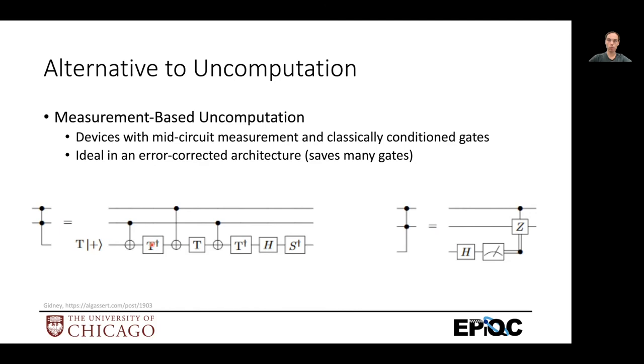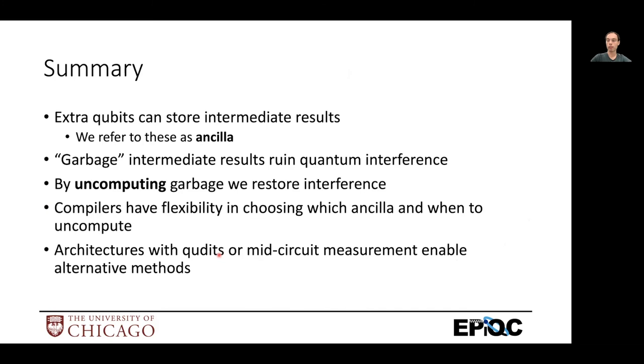So if measurement's easy and T gates are hard, then this is a big win, you now have two easy gates or three, two and a half easy gates on average, instead of a bunch of hard gates.